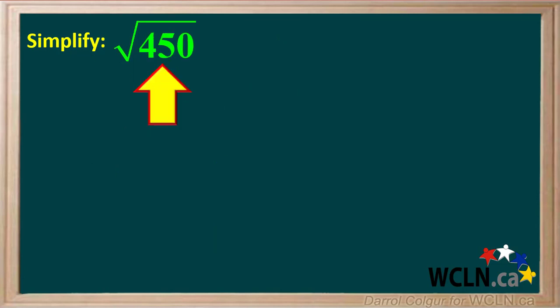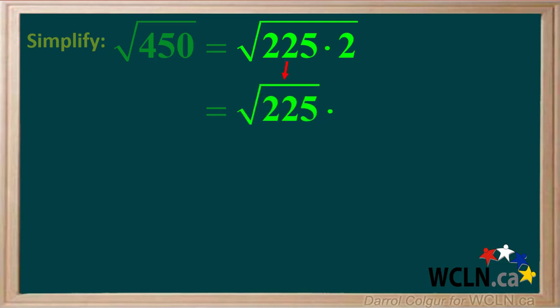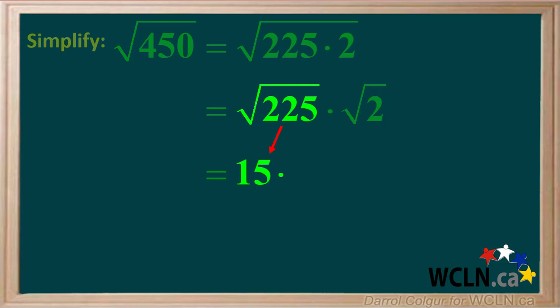Let's do another example. You're asked to find the square root of 450. 450 can be factored to 225 times 2. You can split the square root of 225 times 2 into the square root of 225 times the square root of 2. 225 is a perfect square — you might remember that the square root of 225 is equal to 15.